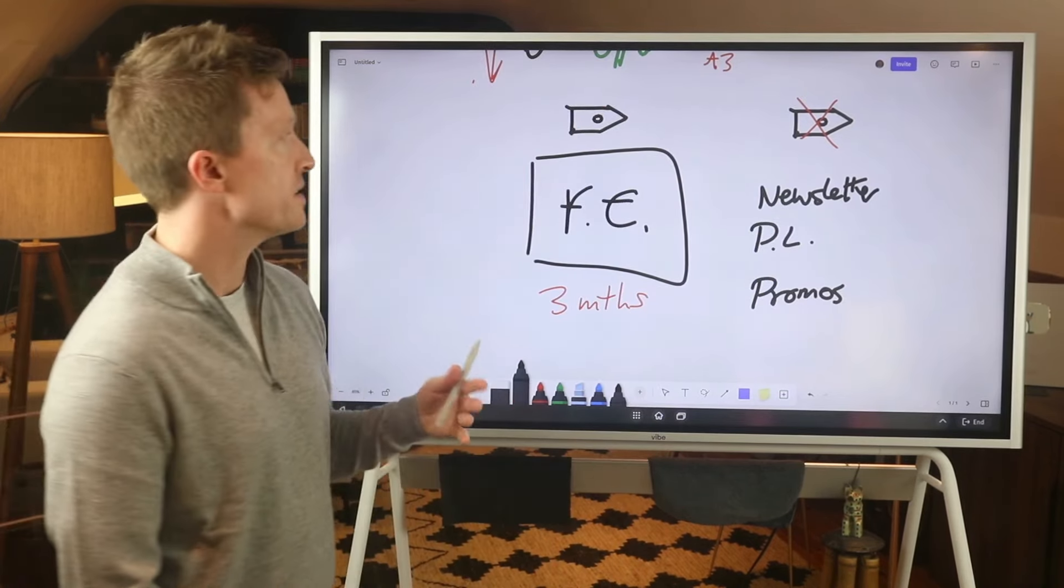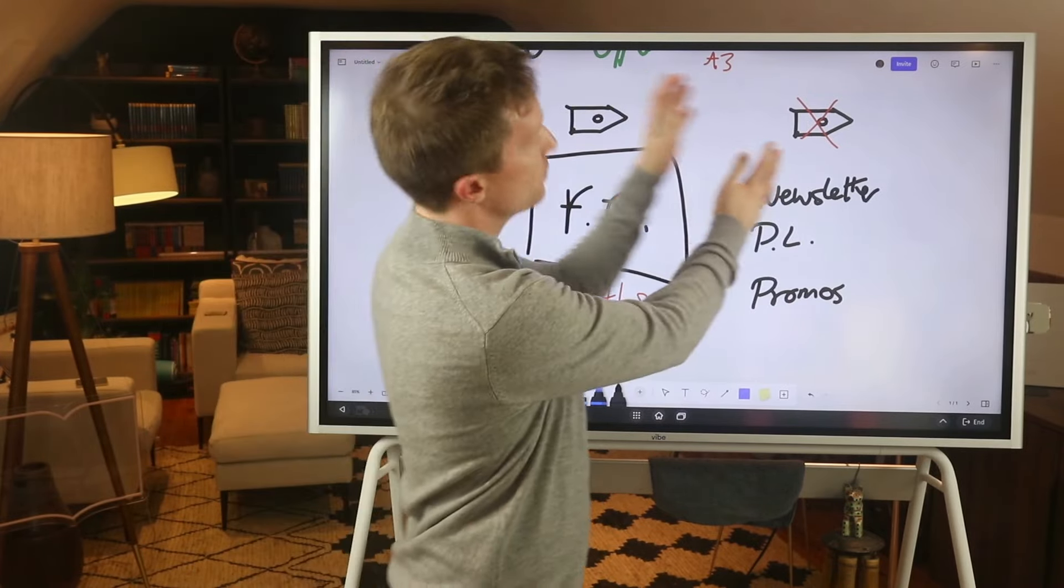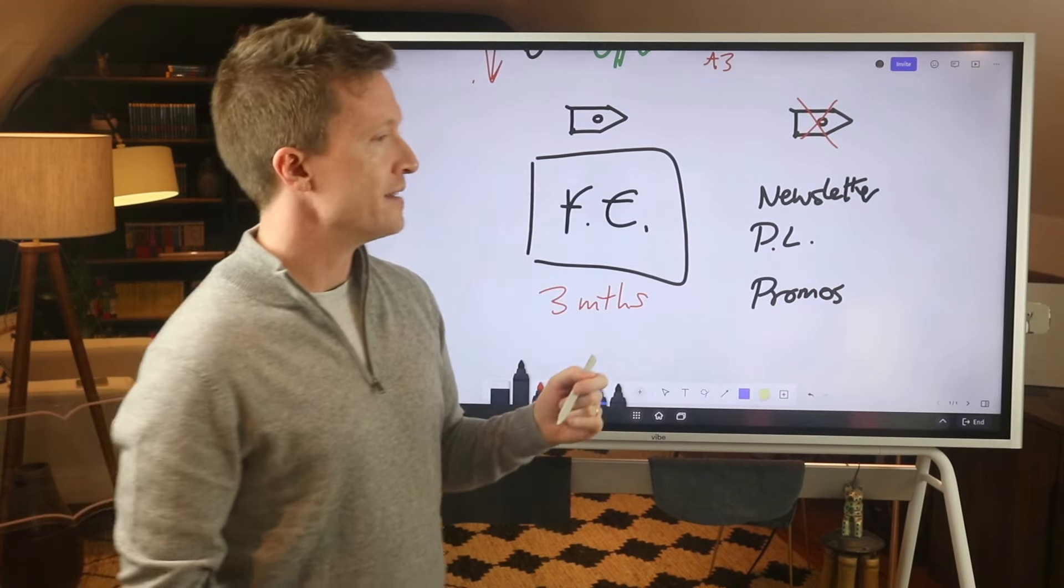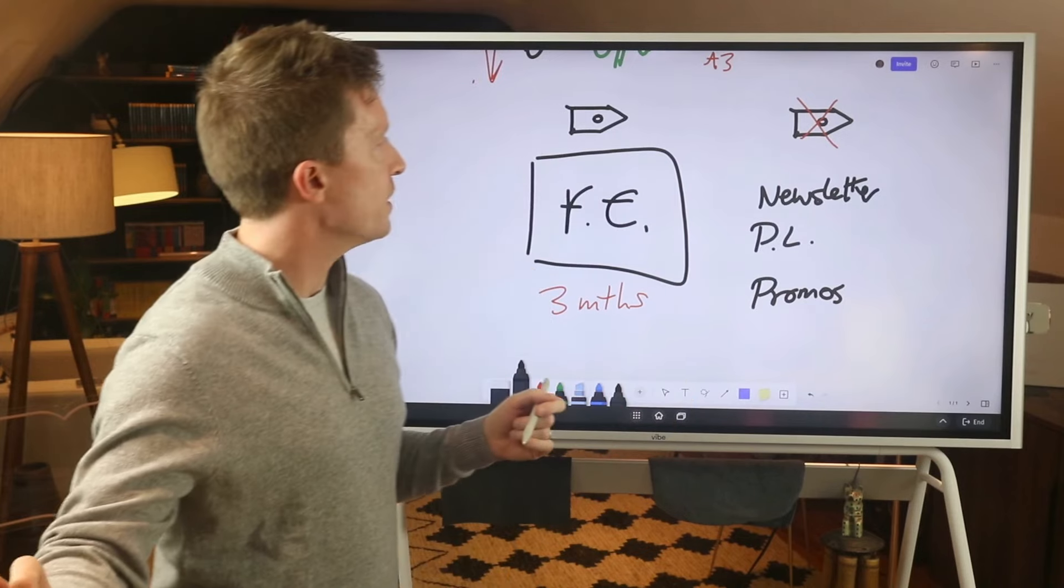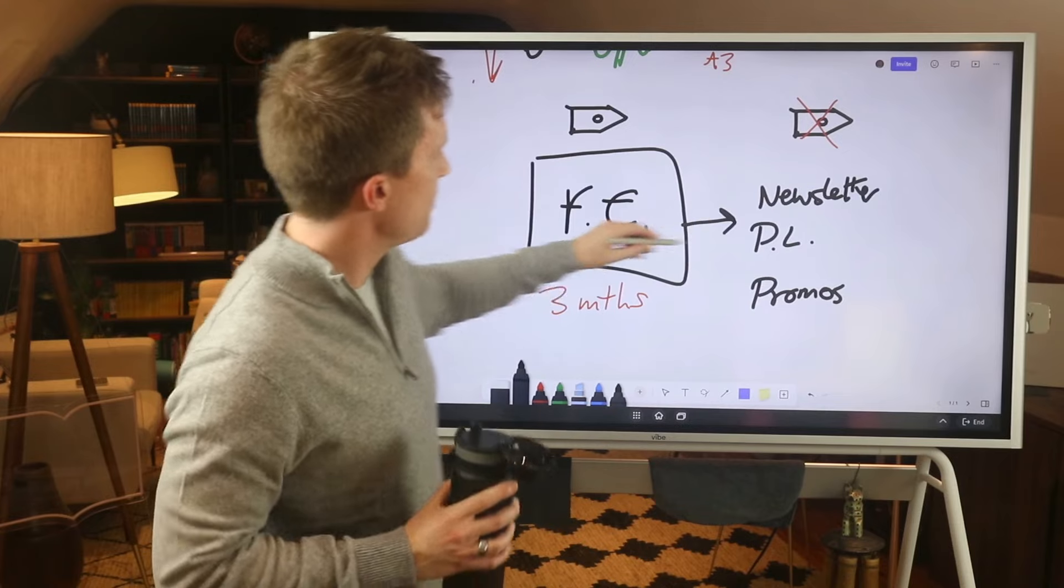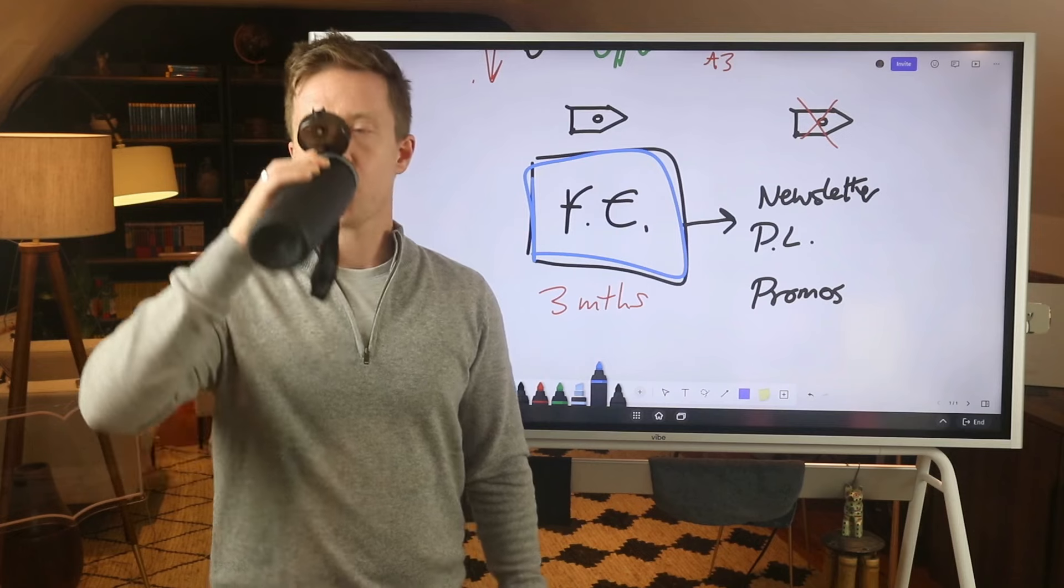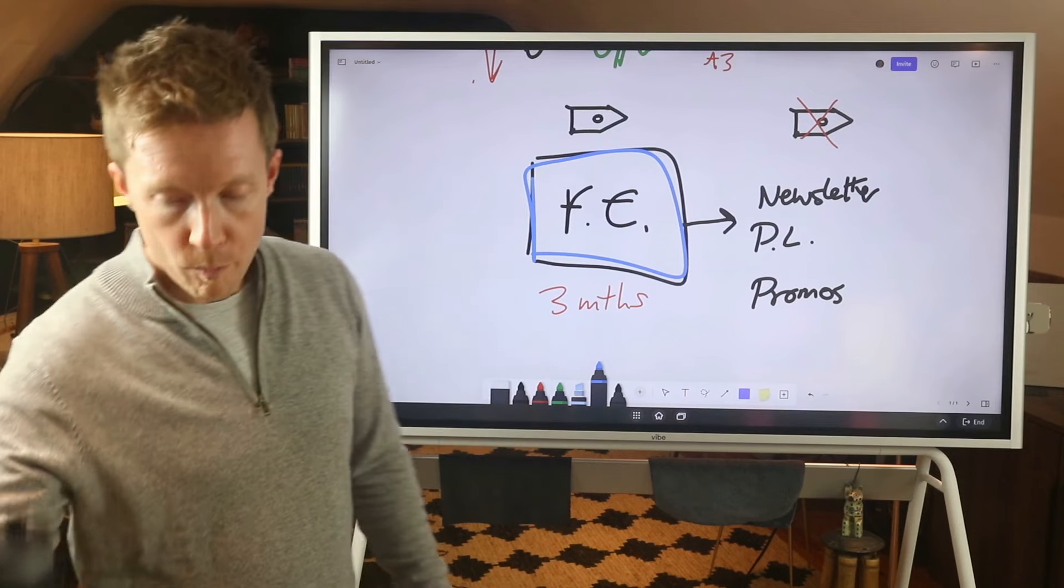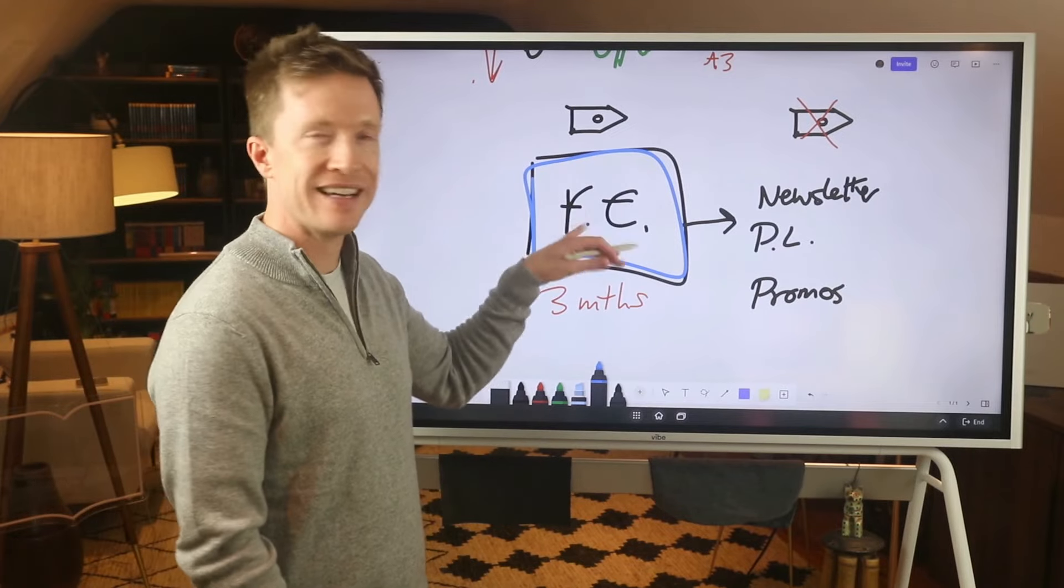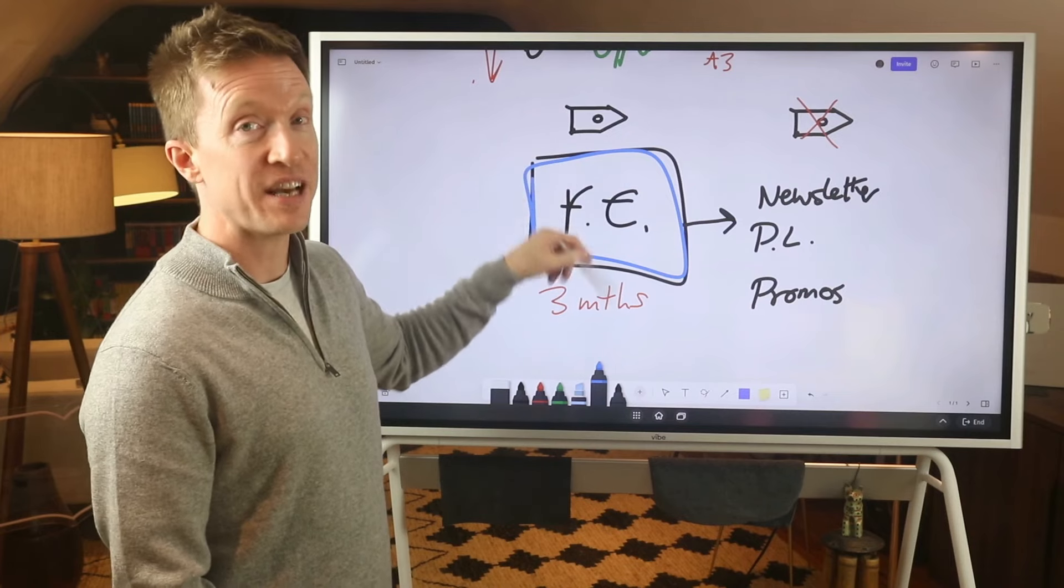Now at the end of three months, that tag then gets removed. So we call it a not ready for broadcast tag. And then after three months when they finished this front end sequence, they get the tag removed. And now they just get basically newsletter, weekly newsletter, product launches, promos, any old stuff, whatever we happen to be doing in the wider business.